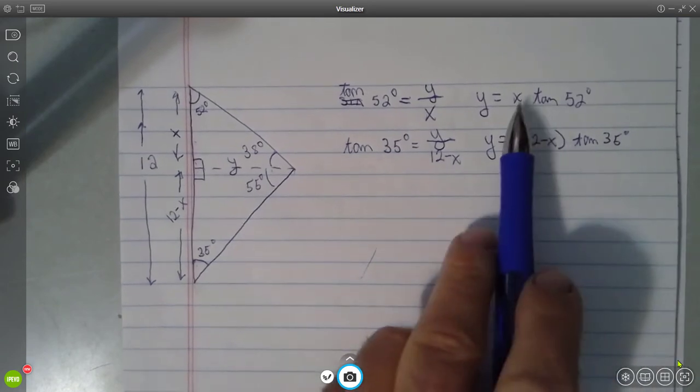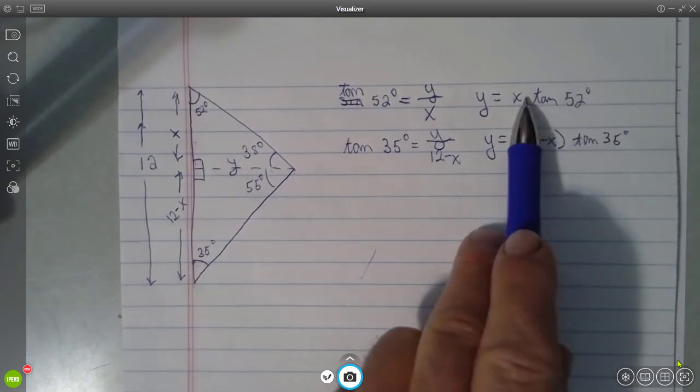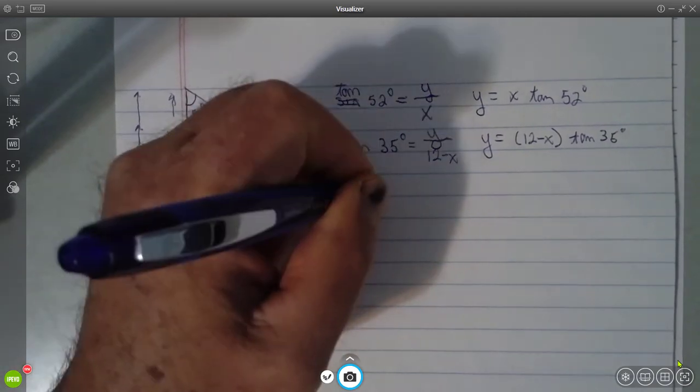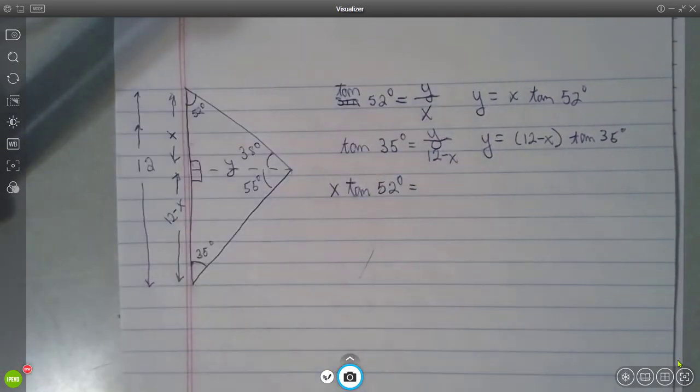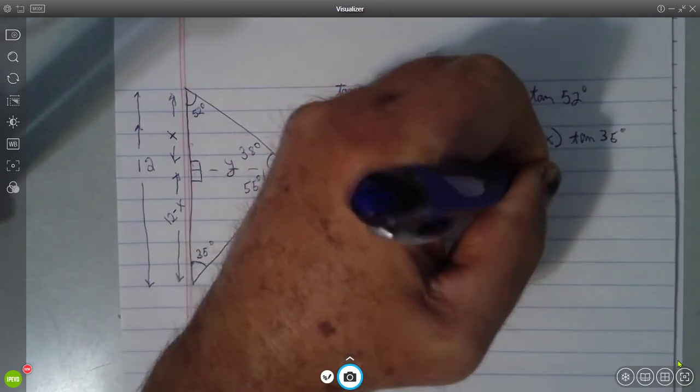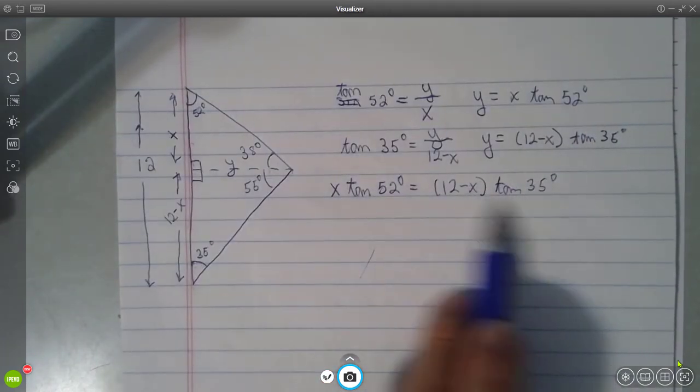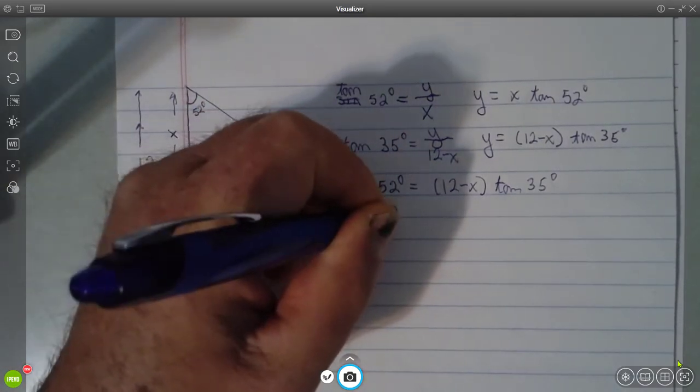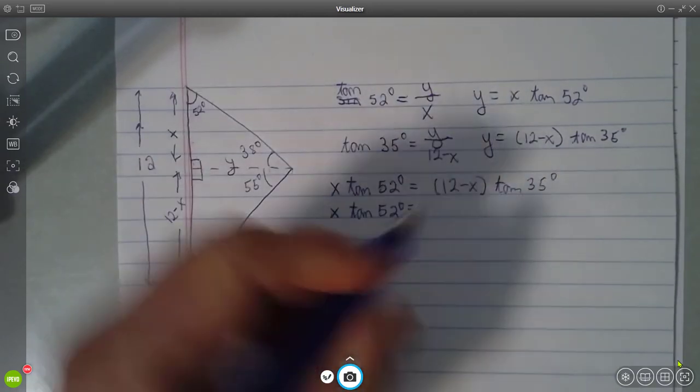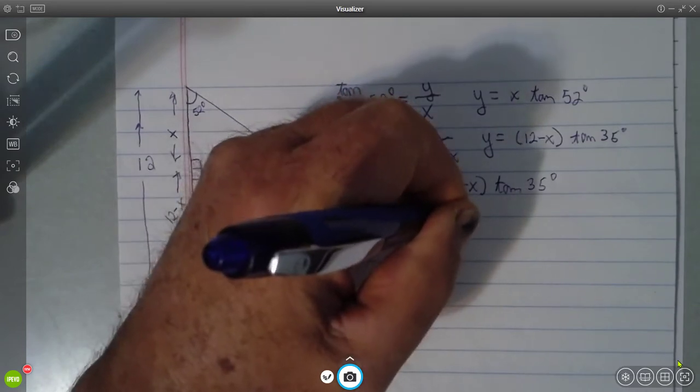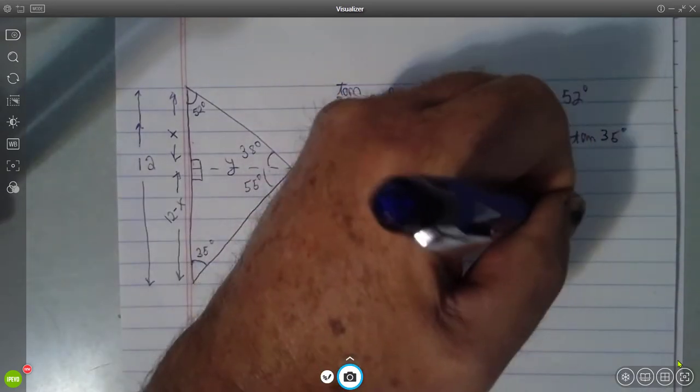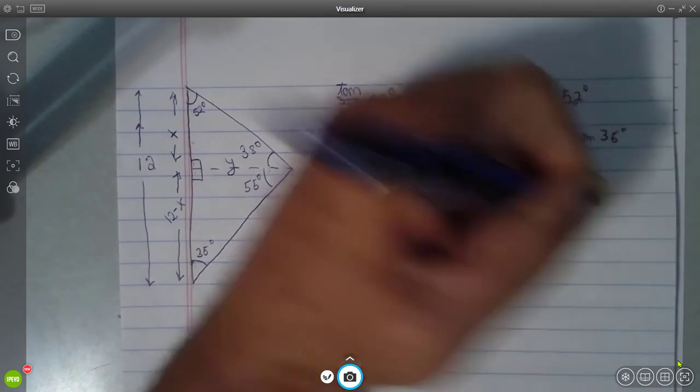Okay, so y is equal to this product, and y is equal to this product, that makes these two things equal to each other. So here, x times the tangent of 52 degrees is equal to 12 minus x, times the tangent of 35 degrees. And now we apply the distributive law. So we have 12 times the tangent of 35 degrees, minus x, times the tangent of 35 degrees.